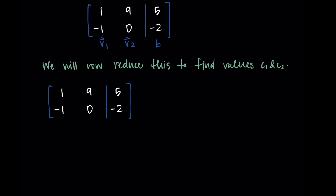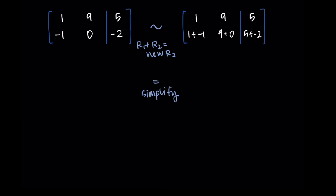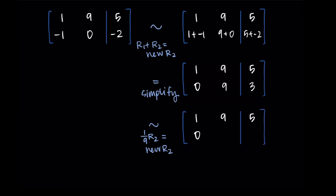I need a zero in the lower left, so I'll replace row 2 with row 1 plus row 2: [1 + (-1), 9 + 0, 5 + (-2)] = [0, 9, 3]. Now I have a leading 1 in row 1 and a zero below it. Next, I need a leading 1 in the second column, so I divide row 2 by 9, giving [0, 1, 1/3].